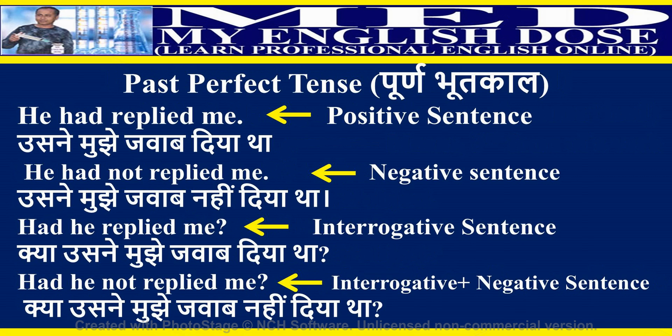Examples of past perfect tense: He had replied me (positive). He had not replied me (negative). Had he replied me? (interrogative). Had he not replied me? (interrogative negative).